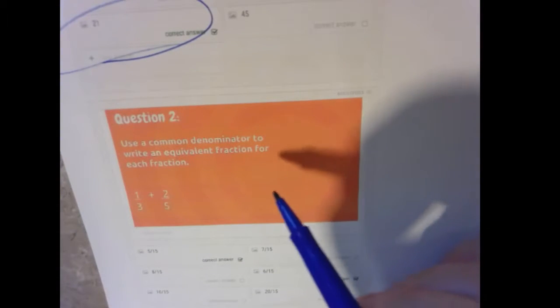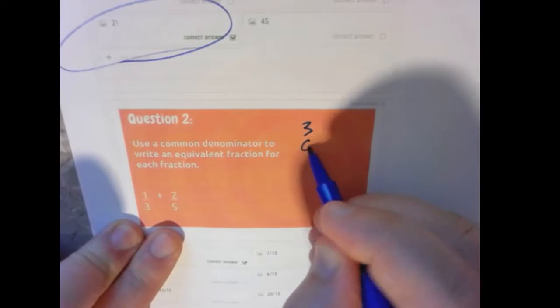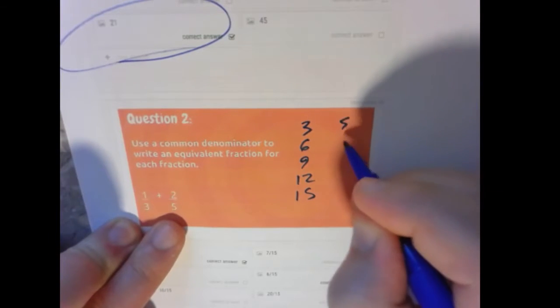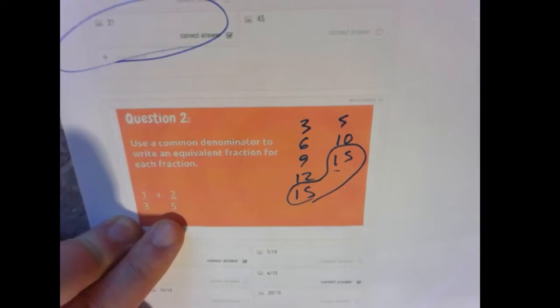Next, use the common denominator to find the equivalent fraction for each of these fractions. Okay, so we do our multiples of 3: 3, 6, 9, 12, 15. Multiples of 5: 5, 10, 15. So it looks like our common denominator will be 15.